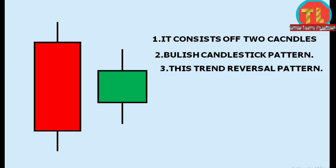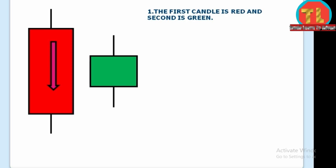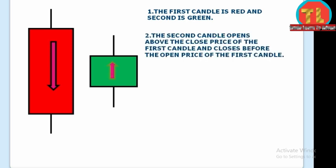This is a bullish candlestick pattern that indicates a trend reversal. The first candle is red and the second candle is green. The second candle opens above the close price of the first candle and closes before the open price of the first candle.